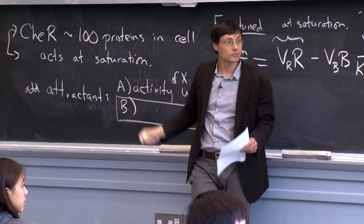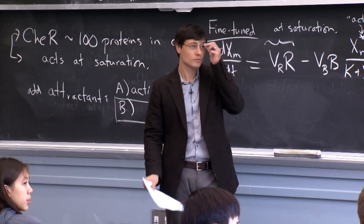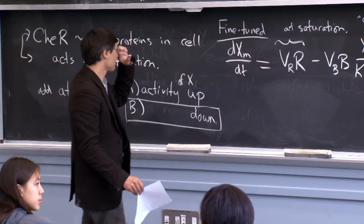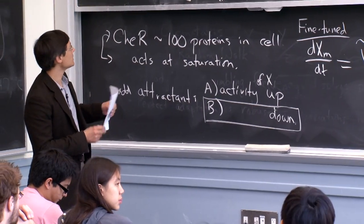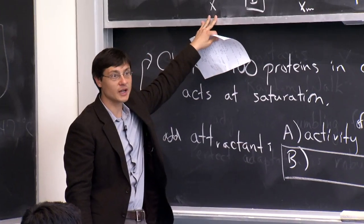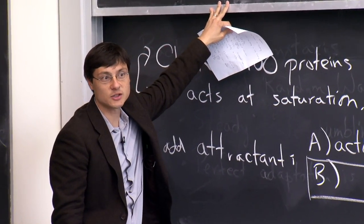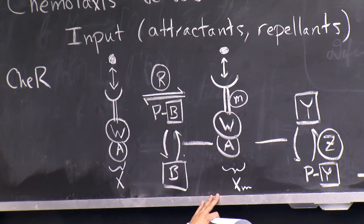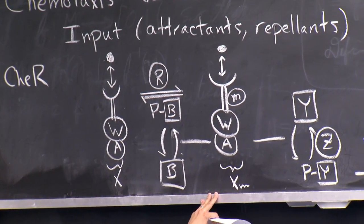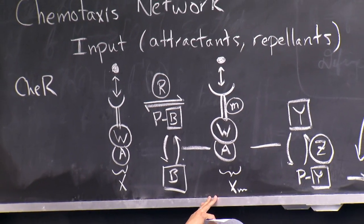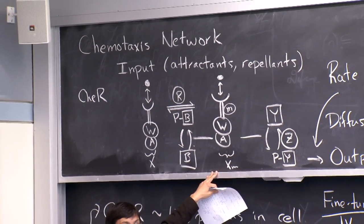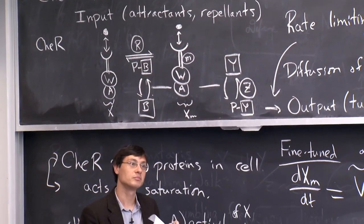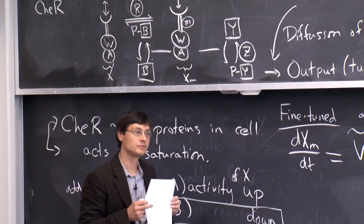The relationship between activity and methylation: the unmethylated receptor is assumed to have no activity — it doesn't do any phosphorylation. The methylated receptor has some activity, characterized by a rate or by the fraction of time it is in this active state. So it's the methylated version that drives all downstream signaling.